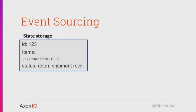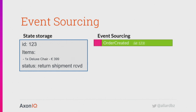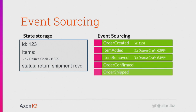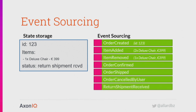How is that fundamentally different from state storage? In state storage, we just know the current state of things — how things are right now. We don't know how we got there. In some cases we can derive some information, like that somebody bought a chair and sent it back. With event sourcing it works differently — we don't store the current state, but we store everything that happened, every single action that led to the current state. Instead we store: order created, item added, item removed, order confirmed, order shipped, order canceled by user, and return shipment received. There's information here that we'd otherwise lose — for example, that somebody added two chairs and then removed one, or that we had to wait for the return shipment because the order was shipped before it was canceled.